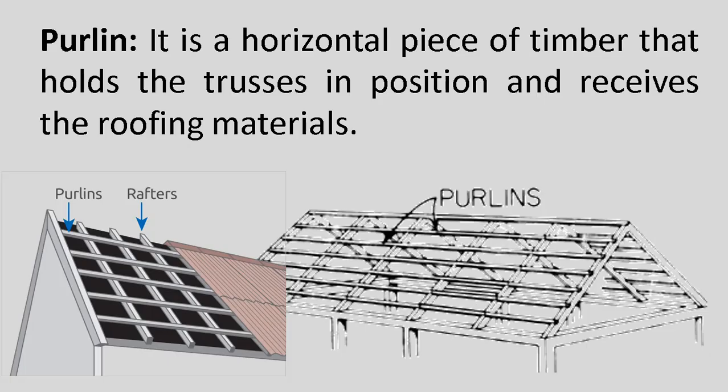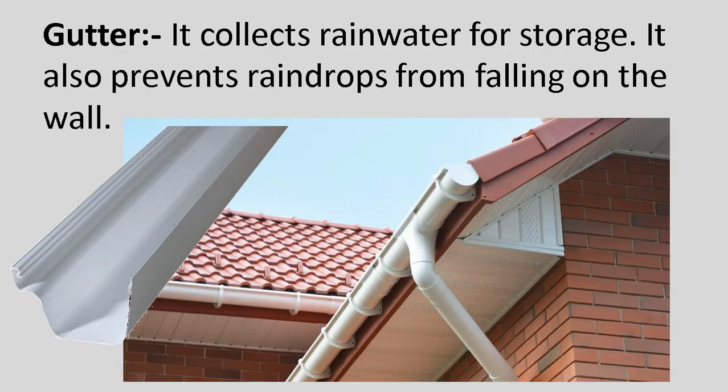Perlin: It is a horizontal piece of timber that holds the trusses in position and receives the roofing materials. Gutter: It collects rainwater for storage and also prevents raindrops from falling on the wall.